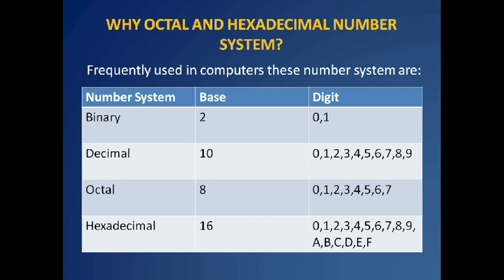That is why you need to understand the four most common number systems frequently used in computing. These number systems are characterized by their numbers, base, and digits. Binary has base 2 with digits 0 and 1.